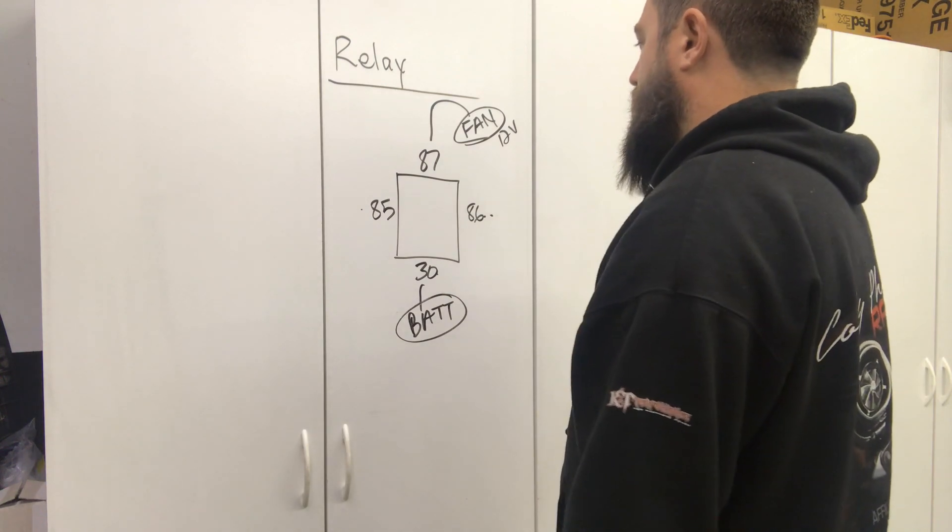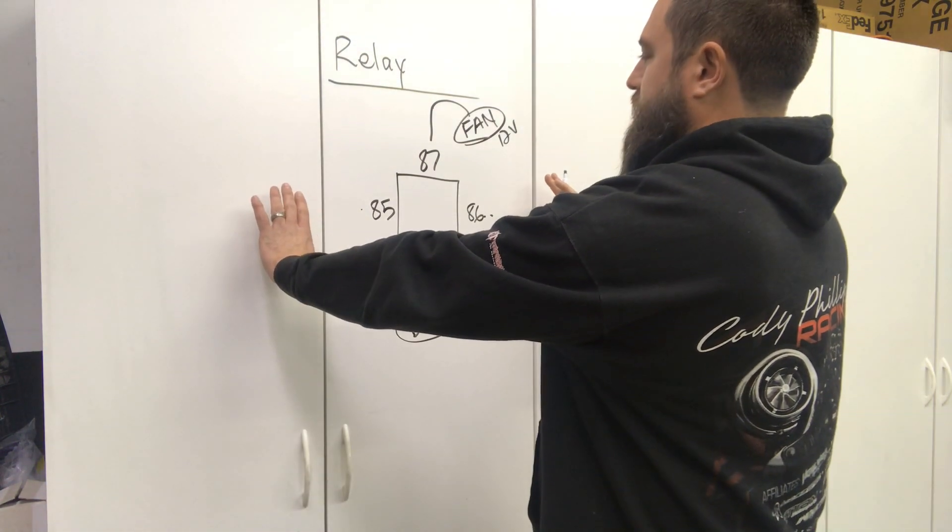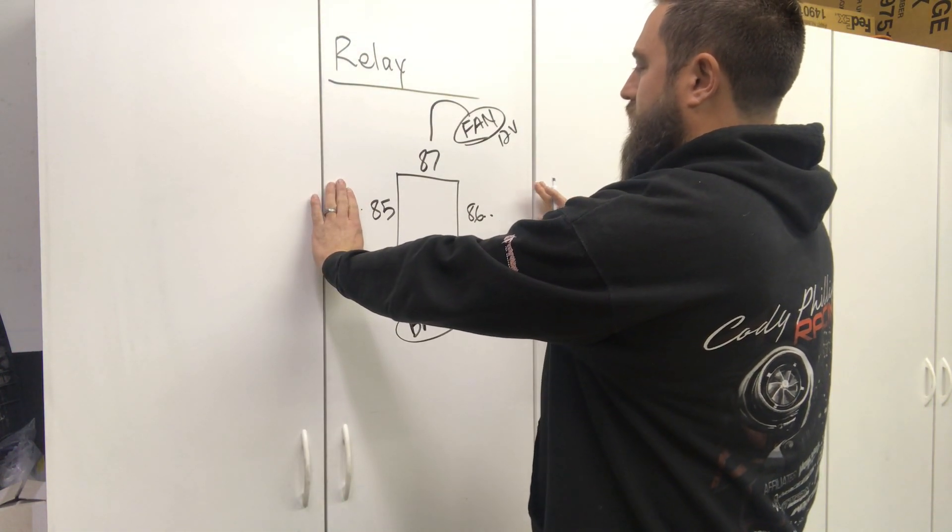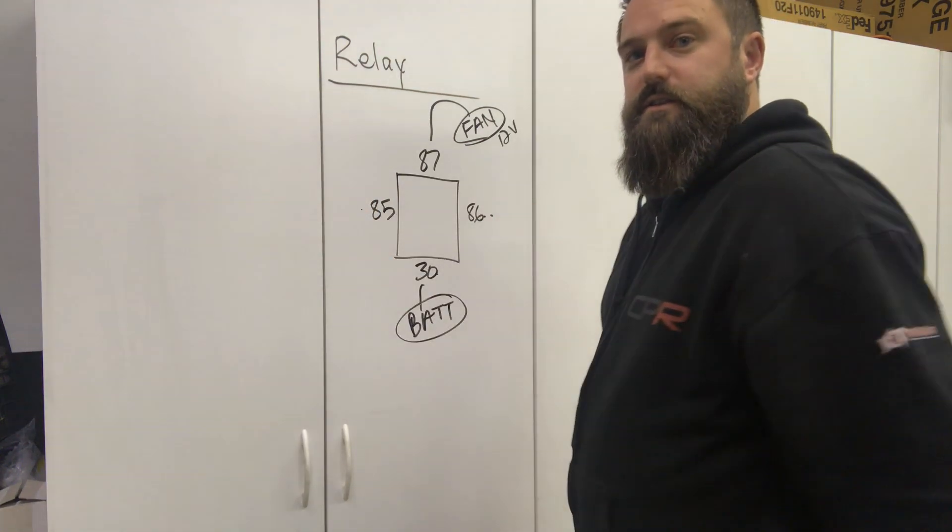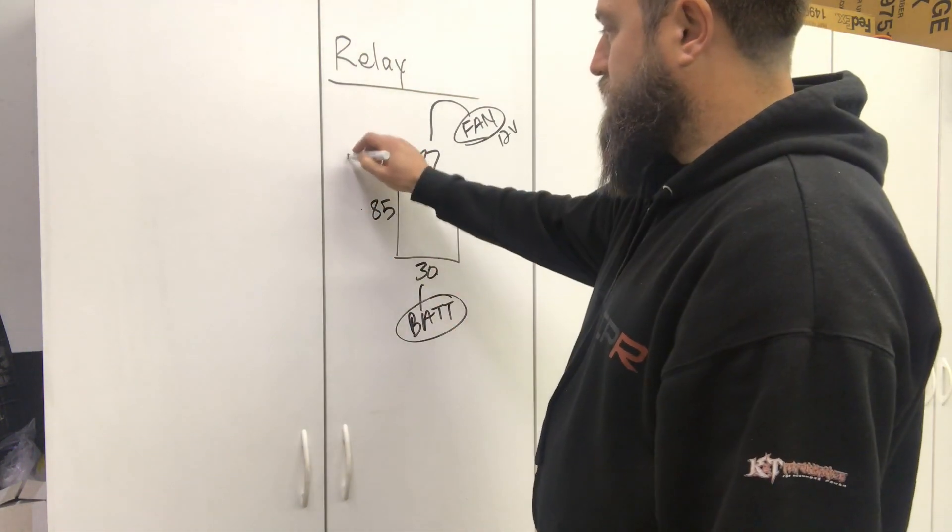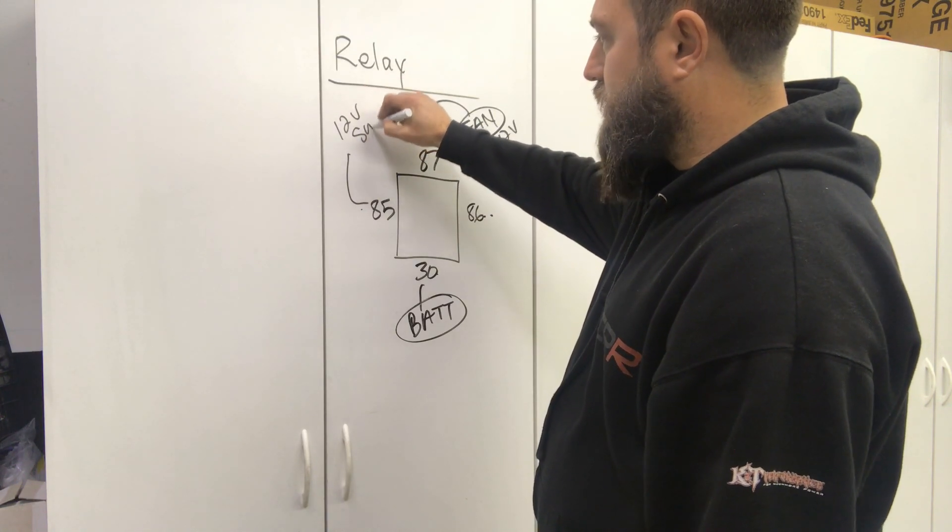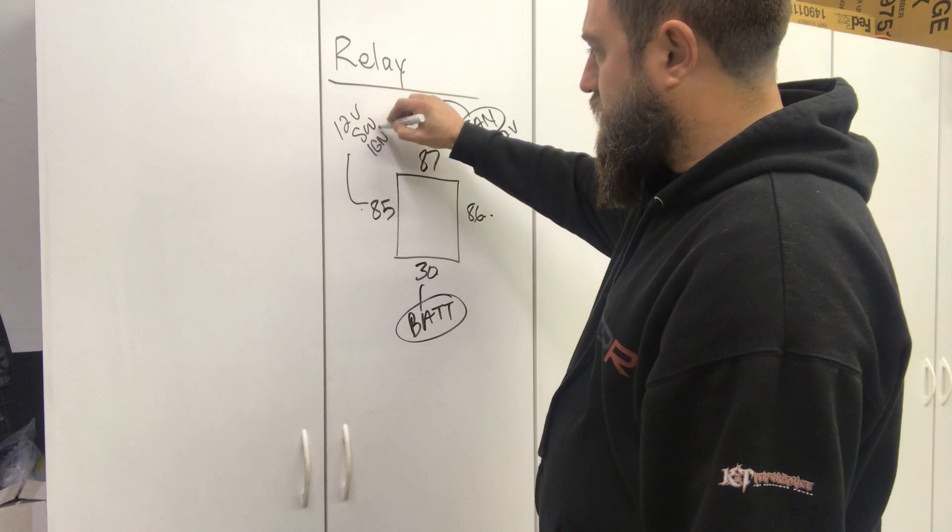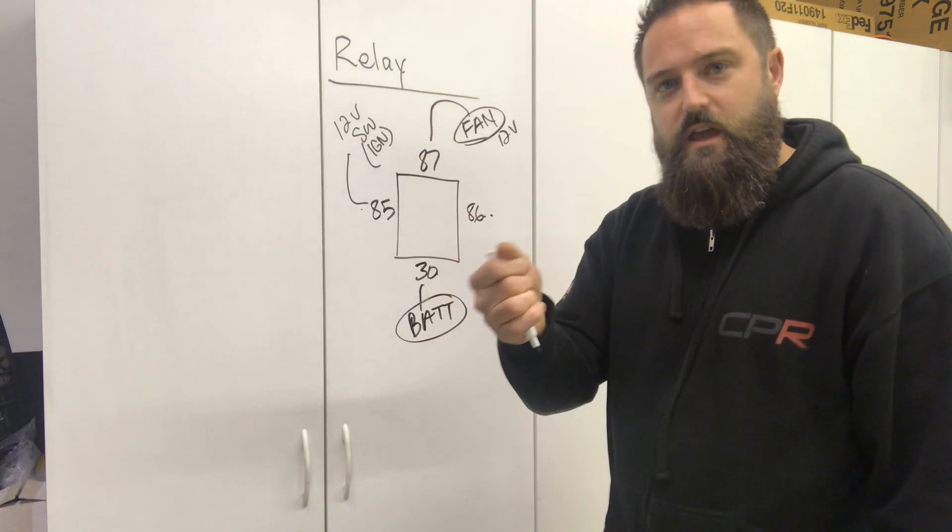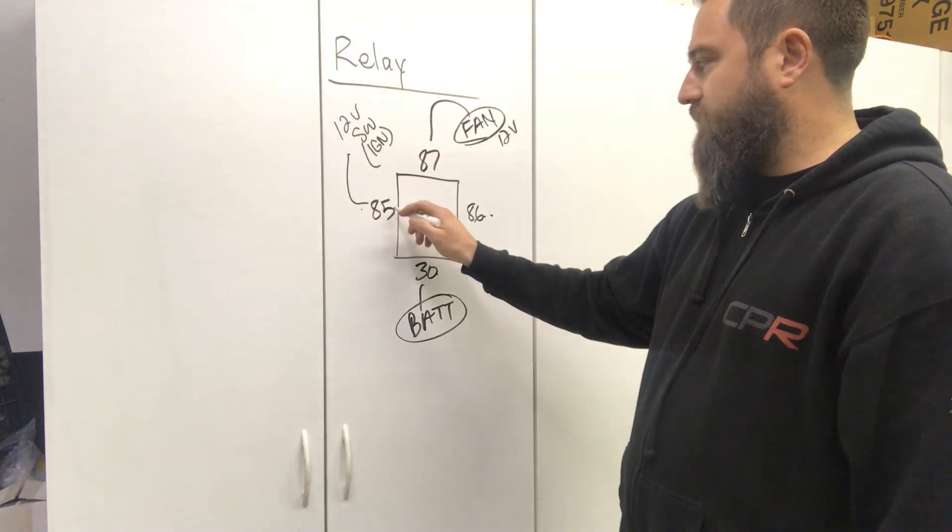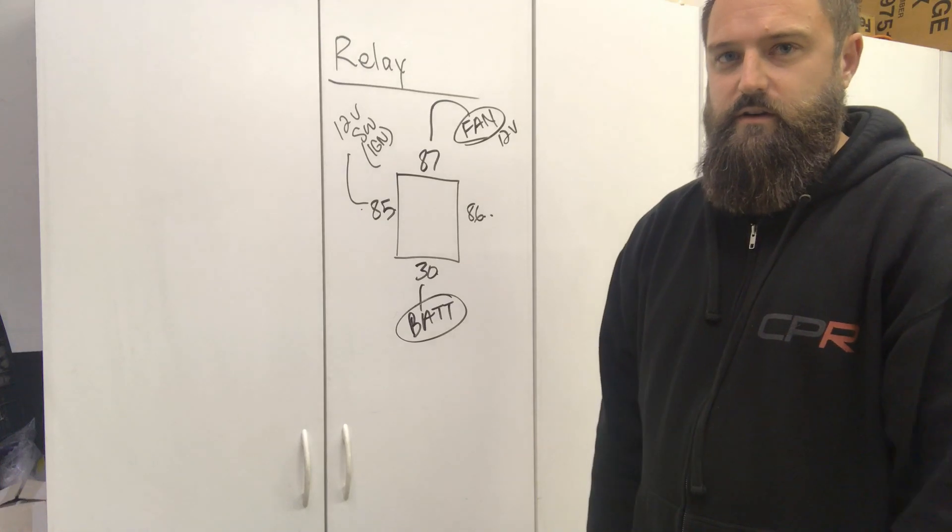The way this coil works is it needs power on one side and ground on the other side. A typical way to wire this up is position 85 to a 12-volt switch, like ignition source. When you power on your key in your vehicle, it's going to provide half the equation.